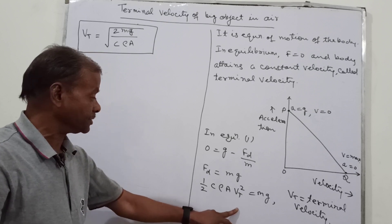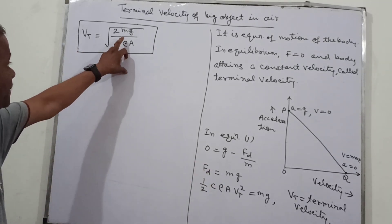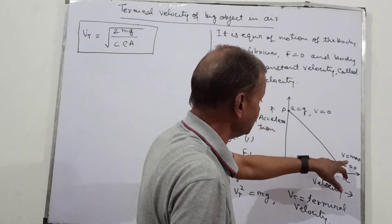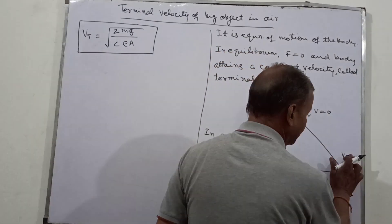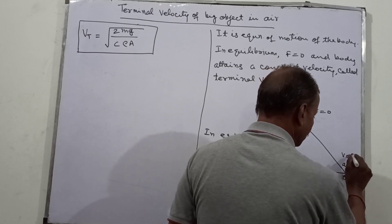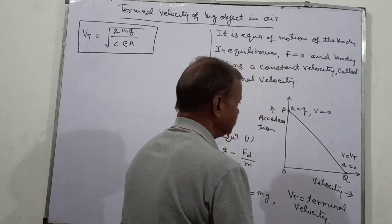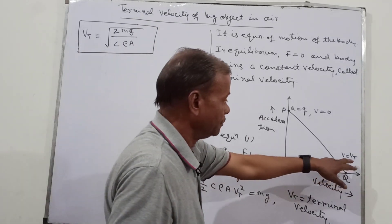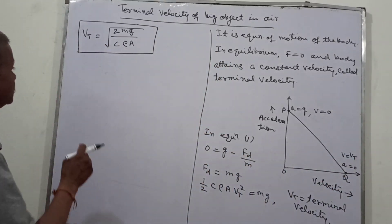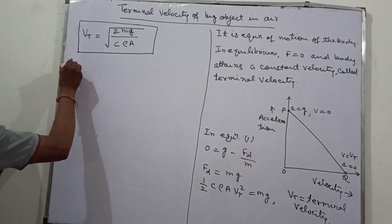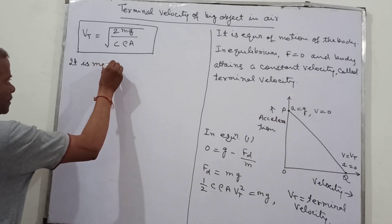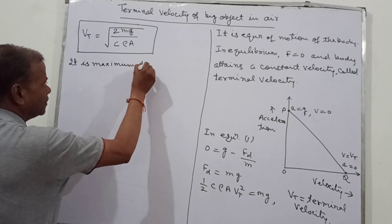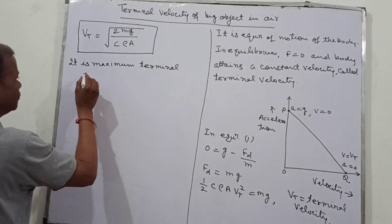So you can see that the terminal velocity depends upon factors M, g, C, rho, and A. Here where V equals zero corresponds to the start, and V maximum equals Vt. So Vt is the maximum velocity, which is the terminal velocity.